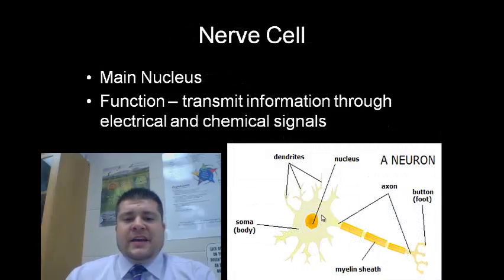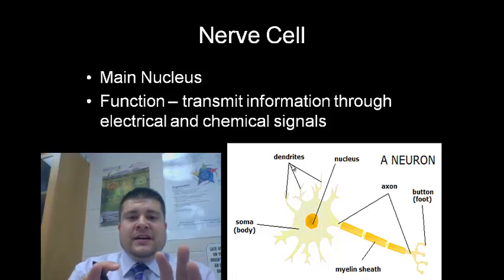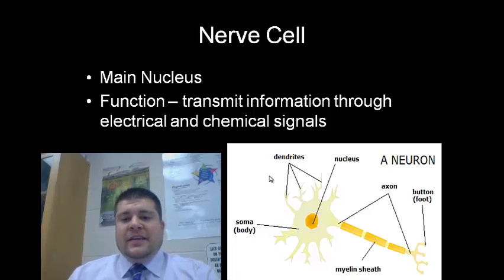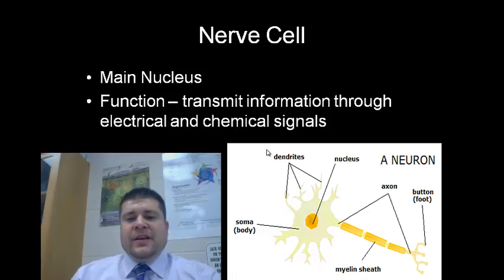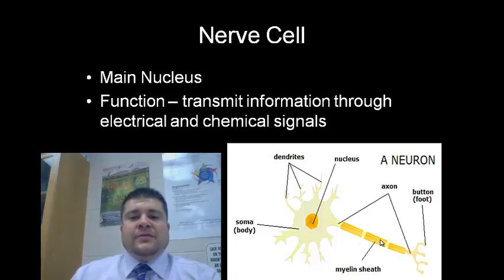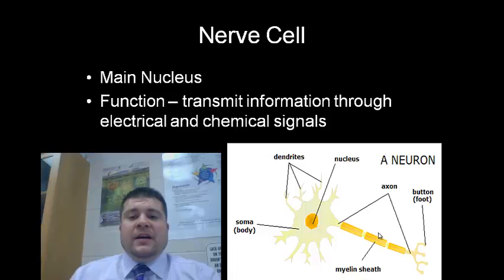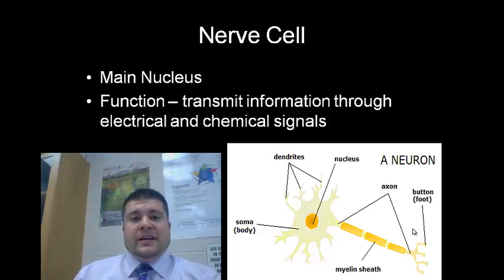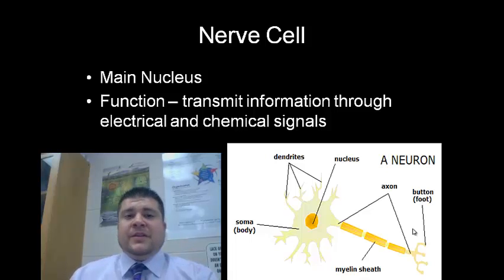A nerve cell has a main nucleus and a body called a soma, and has dendrites that branch out to other neurons. It usually has a longer section called an axon. This axon is covered in a myelin sheath, which provides insulation so that electric impulses can't be interrupted by another neuron. Then there's a terminal button or foot that attaches to a sensor, like in the tips of our fingers when we feel if something is hot or cold.